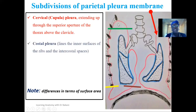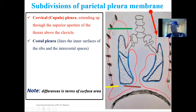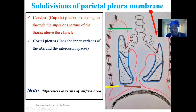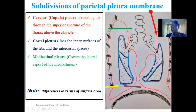The next region is the costal pleural. From the name 'costal,' it means ribs — it is the region that lines over the ribs and also the intercostal spaces. We know that between each of the ribs we have intercostal spaces. So the region of the parietal pleural that lines over the ribs and intercostal spaces is called the costal pleural.